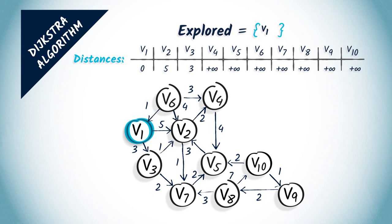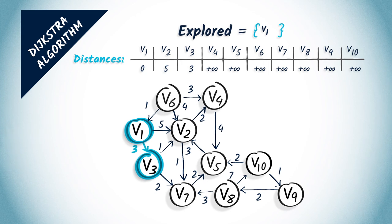Let us now start a new iteration of the algorithm. In the first step, we select an unexplored vertex at a minimum distance from v1. Here, we choose v3, which is at distance 3. We add it to the set of explored vertices. In the second step, we look at the neighbors of v3, which are v2 and v7, with corresponding weights of 1 and 2.